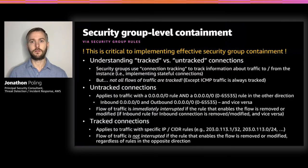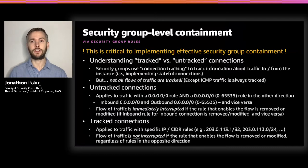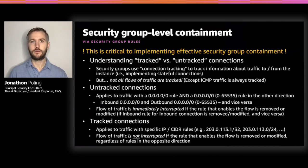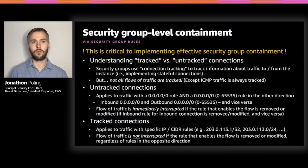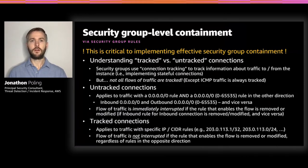Now, this extremely important part is critical to implementing effective security group containment — namely understanding the difference between tracked and untracked connections. This is an area of common misunderstanding, and it's what actually led to the instance in our initial scenario maintaining internet connectivity despite attaching a security group with no rules. Security groups use connection tracking to track information about traffic to and from the instance. Not all flows of traffic are tracked, with the exception that ICMP traffic is always tracked. Untracked connections apply to traffic with a quad-zero rule and a quad-zero rule for all ports in the other direction. For these, flow of traffic is immediately interrupted if the rule that enables that flow is removed or modified.